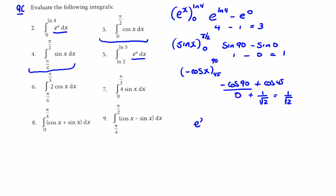e to the power of x again integrates to e to the power of x. So we have e to the power of x between natural log of 5 and natural log of 2, which is e to the power of the natural log of 5, minus e to the power of the natural log of 2. As we've seen before, that's going to be 5 minus 2.